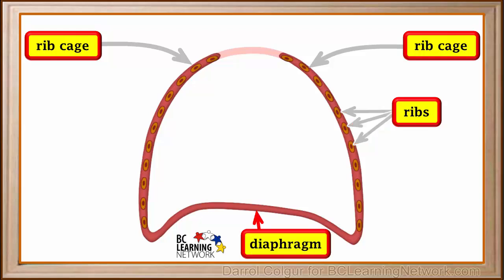At the bottom of the chest cavity, there is a large band of muscle called the diaphragm. The diaphragm is connected to the ribcage to form a totally sealed cavity.